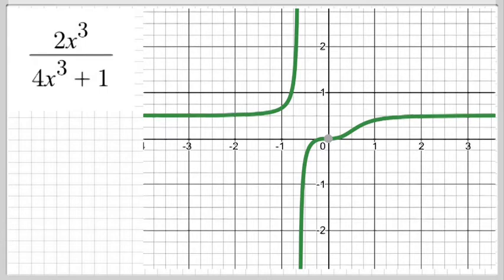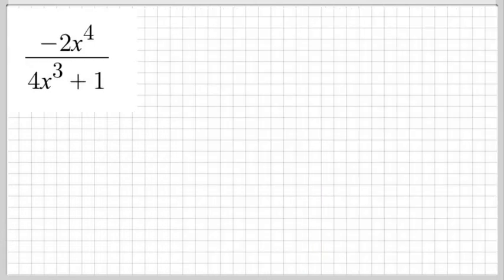Now this guy, it's not considered range, but we can talk about range later. Right now this is considered end behavior. We're looking at the left side and the right side of the graph to consider what the end behavior is doing.